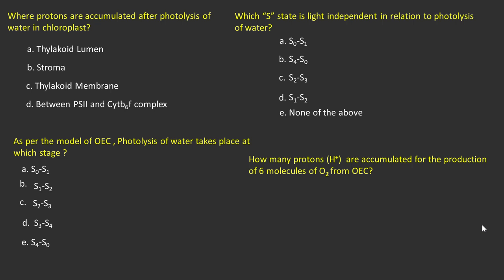Fourth question: how many protons are accumulated for the production of 6 molecules of oxygen from oxygen evolving complex? Options are 24, 12, 6, and 8. The answers of these questions are A, E, B, and A.